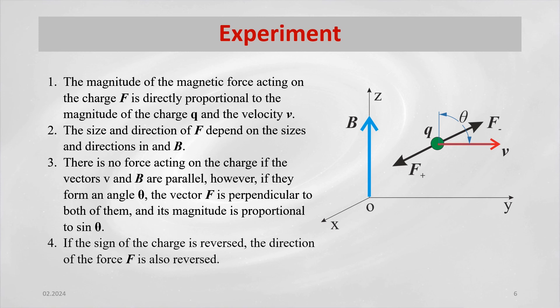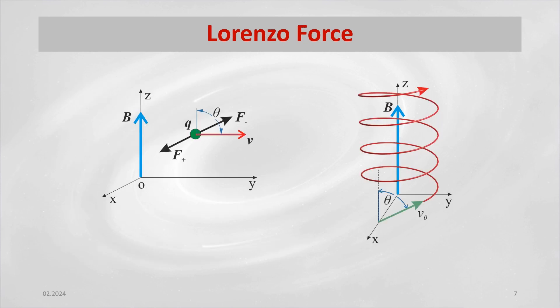4. If the sign of the charge is reversed, the direction of force f is also reversed. The Lorentz force acts on the flying particle through the magnetic field, which results in the rotation of the charge path.